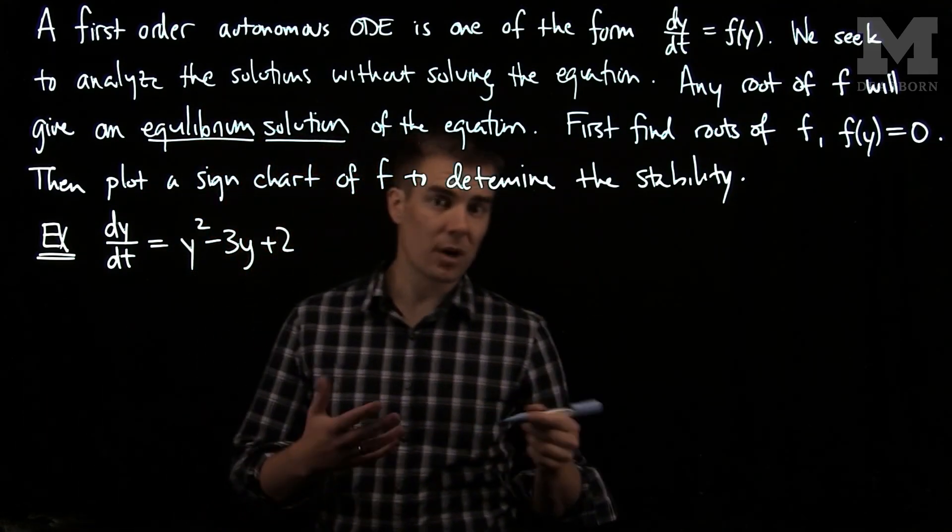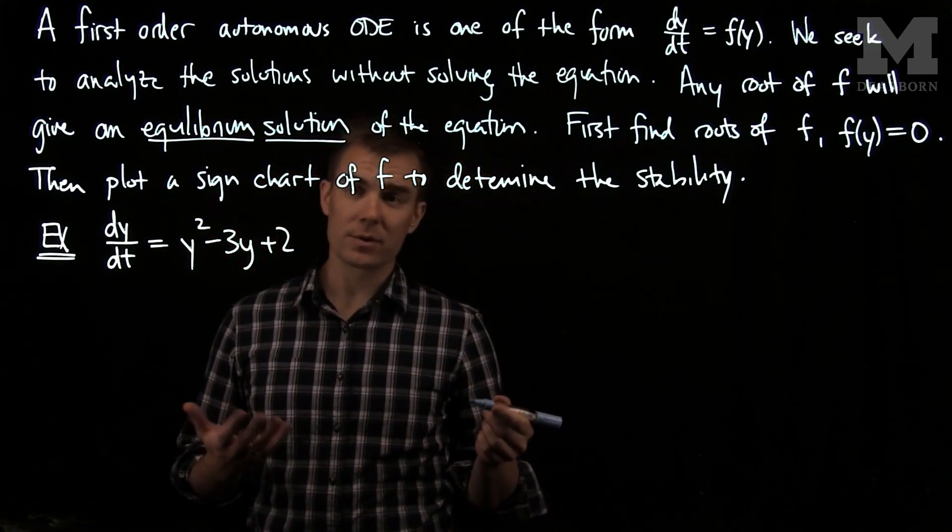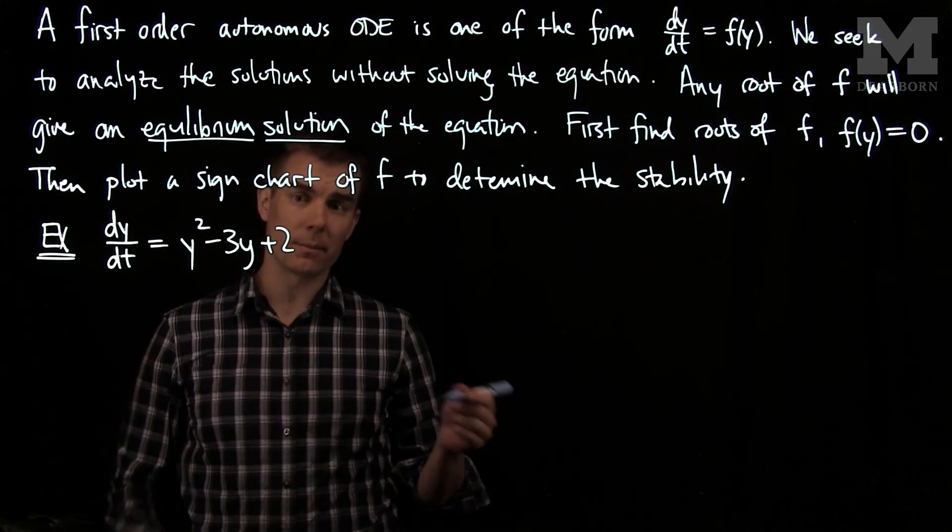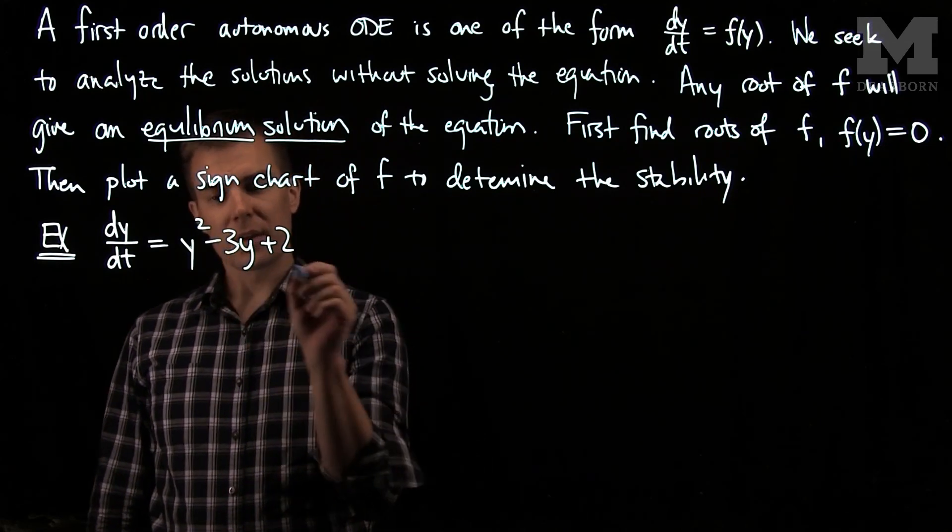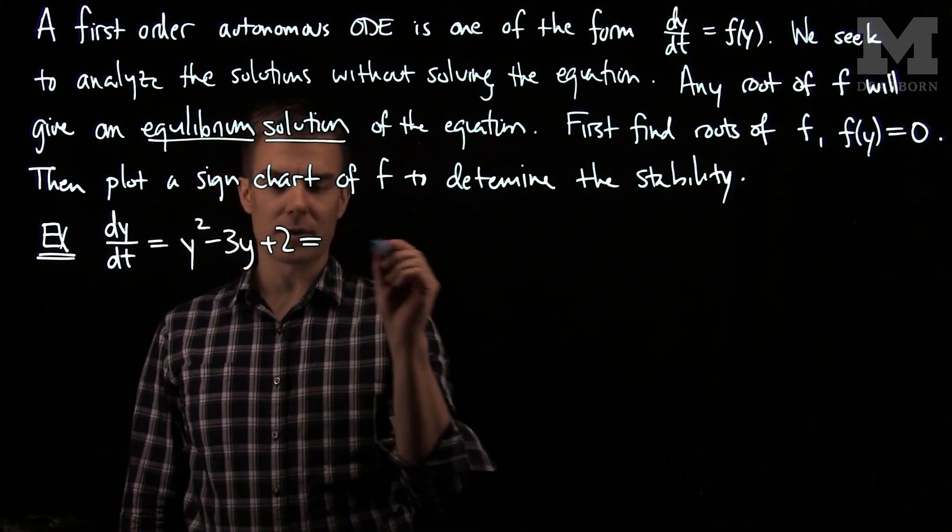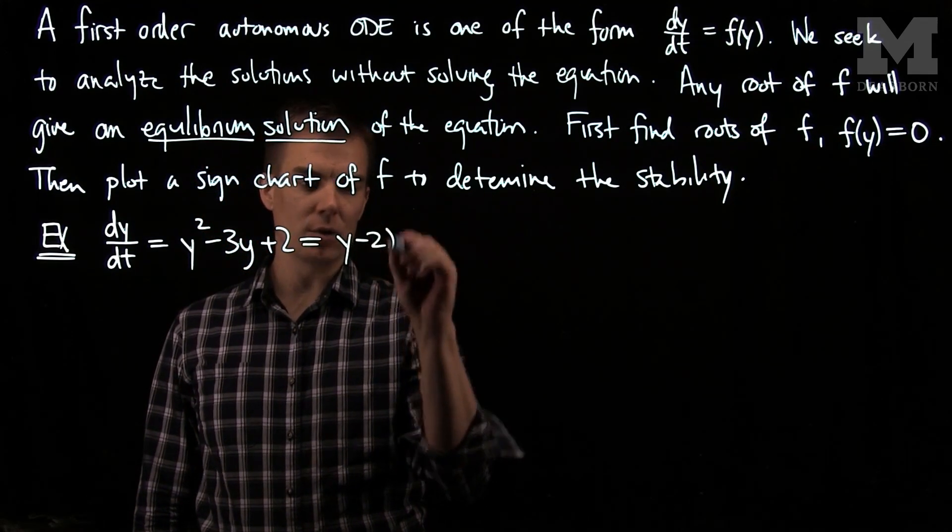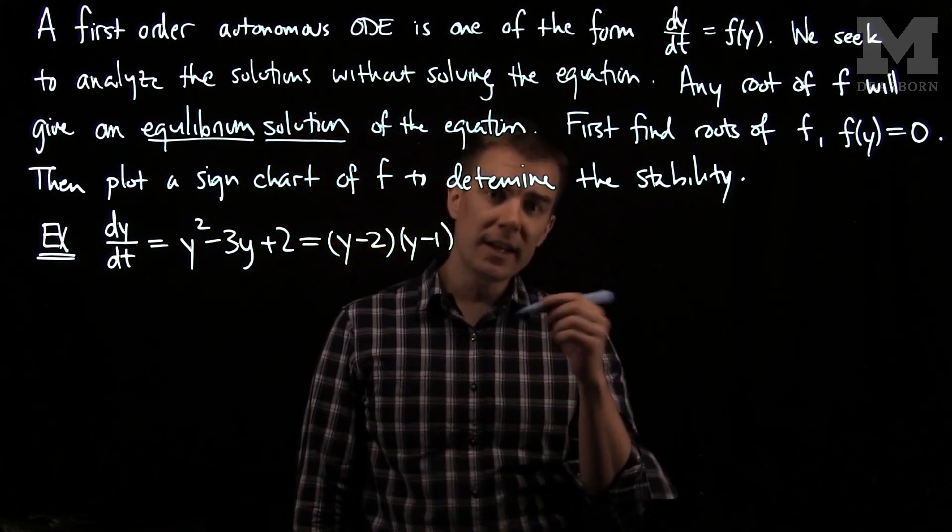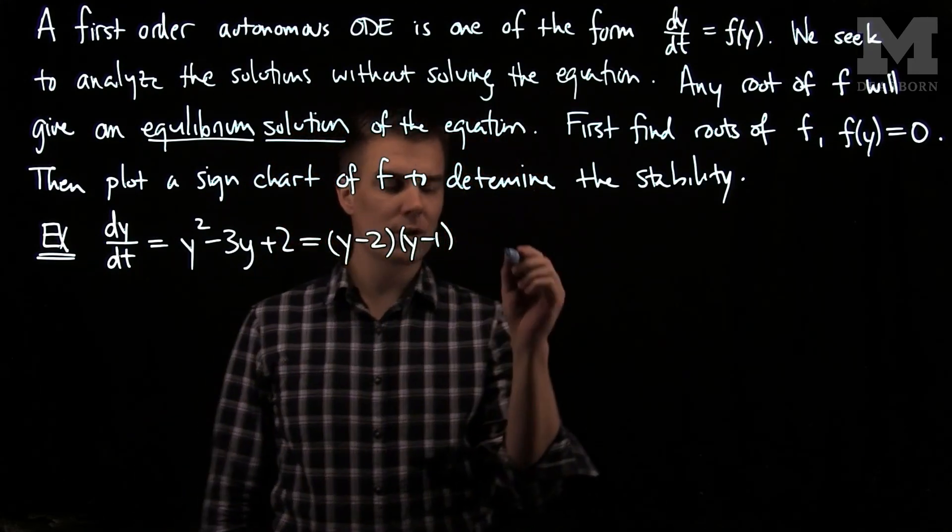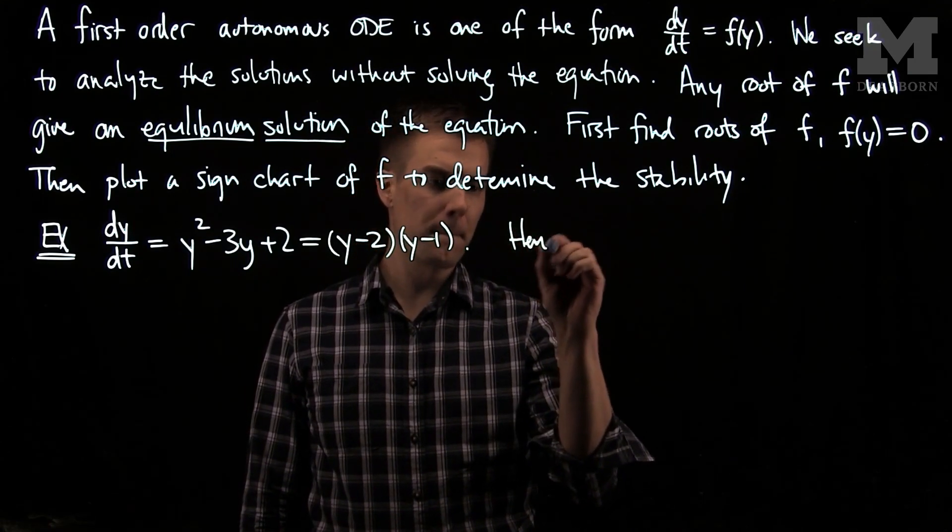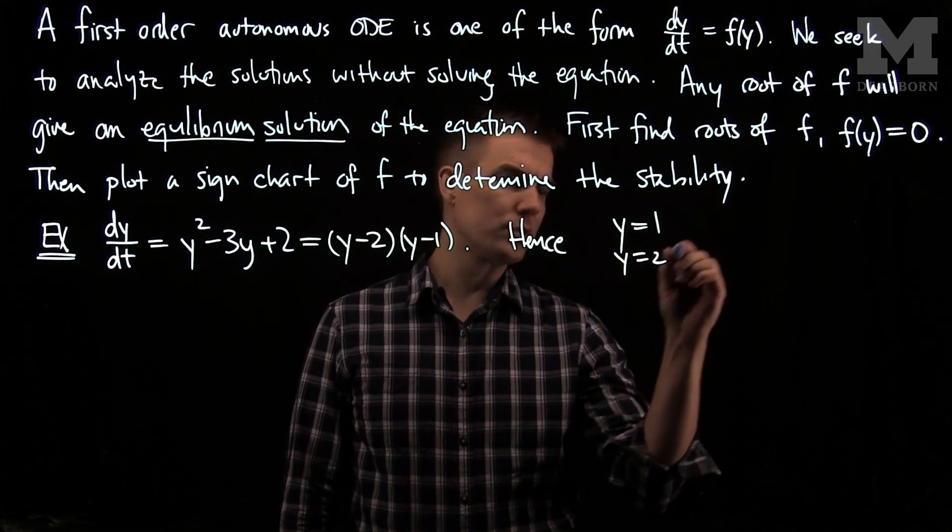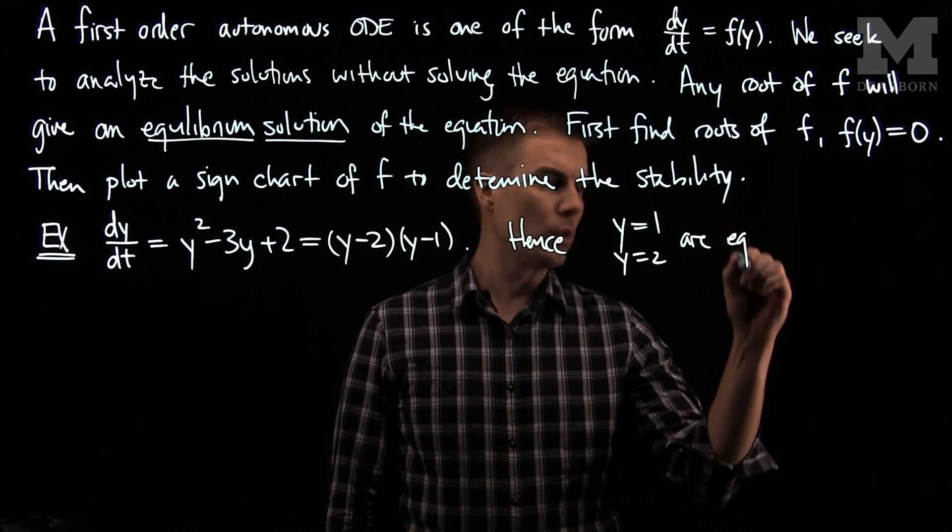Noticing that we can solve this equation by separation of variables, we pause and say, rather than do that, we will investigate the long-time behavior using the following method. Notice that the right-hand side can be factored as (y - 2)(y - 1), which makes it easy to find the roots. Hence, y = 1 and y = 2 are equilibrium solutions.